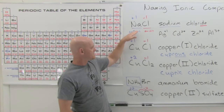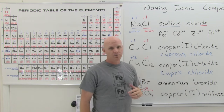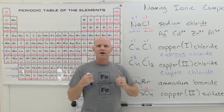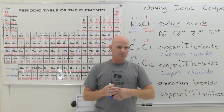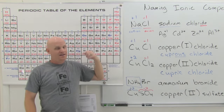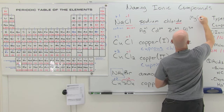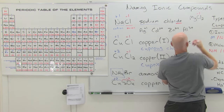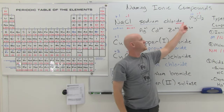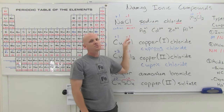We've been starting with formulas and going to names, but you might have to work backwards. For example, given 'sodium chloride': sodium is plus one, chloride is minus one — perfectly balanced one-to-one, giving NaCl. For 'magnesium chloride': magnesium is an alkaline earth, so plus two, and chloride is minus one. Since they're not balanced one-to-one, you need two chlorides to balance the plus two, giving MgCl2. Each chloride is minus one, and two of them equal minus two, balancing magnesium's plus two for a neutral compound.